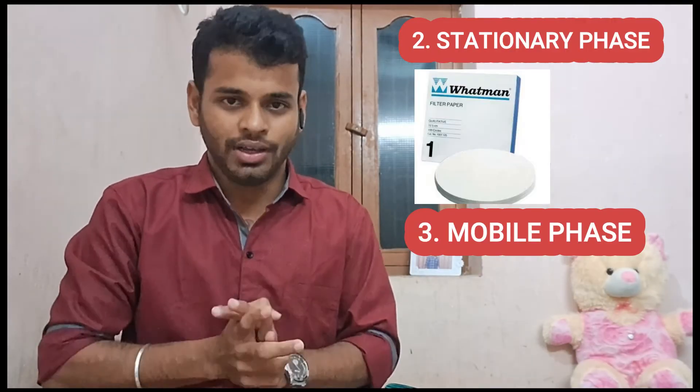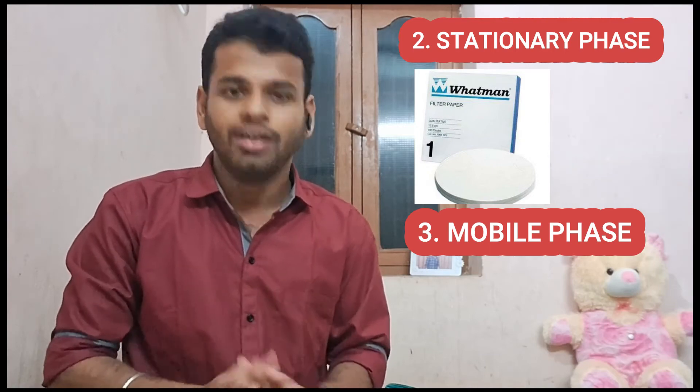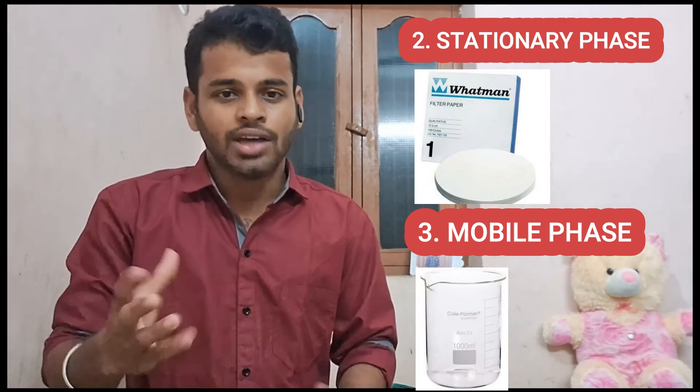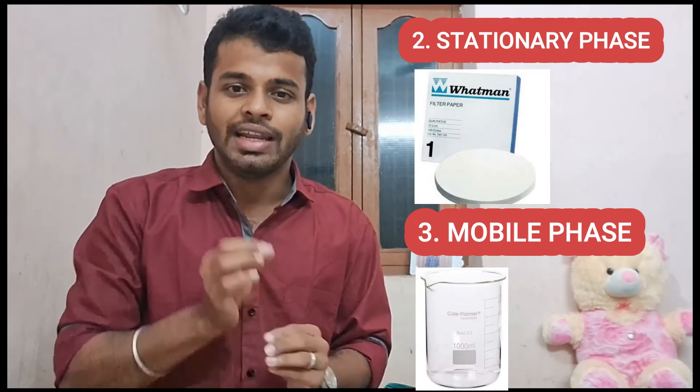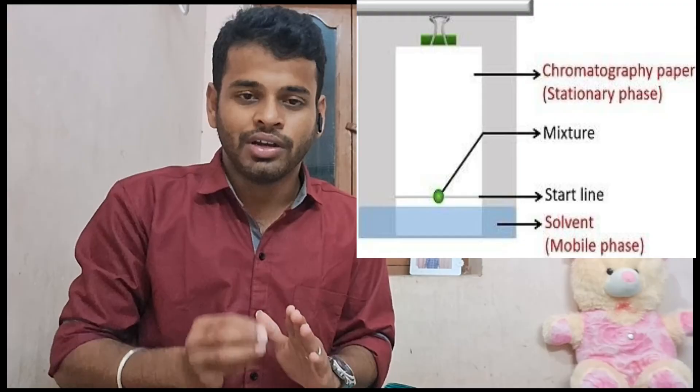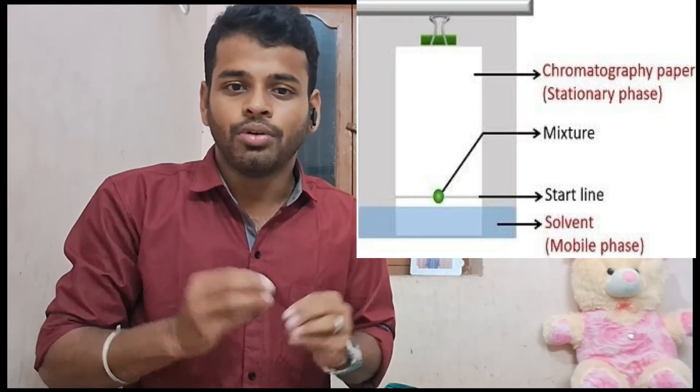Through paper chromatography we know three things. First is the analyte — we separate the analyte for analysis. The first one is the stationary phase and the third one is the mobile phase. The stationary phase is fixed, and the mobile phase is basically the moveable part. In the beaker, the mobile phase moves through the stationary phase and separates the analyte.